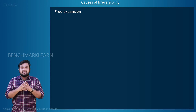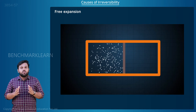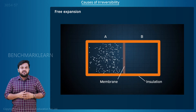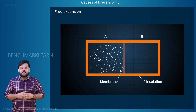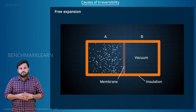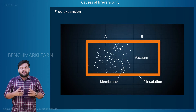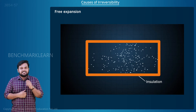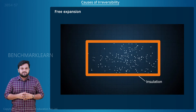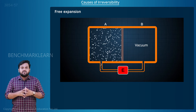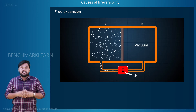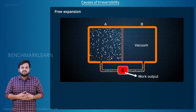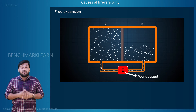Consider an insulated container divided into two partitions A and B by a membrane. A is filled with a gas at pressure P, and compartment B is a vacuum. When we remove the membrane, the gas flows from A to B and fills the entire container. This is the free expansion process. Now let us assume this expansion is done through an engine connected to the compartments A and B. The gas expands through the engine, thereby producing work on the engine.